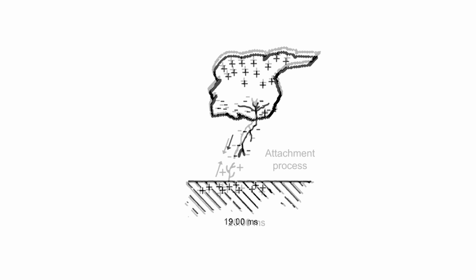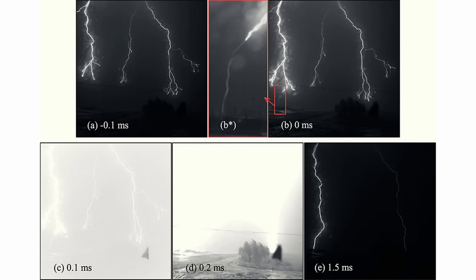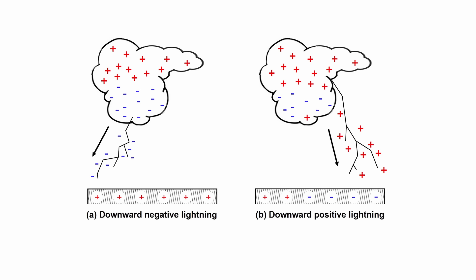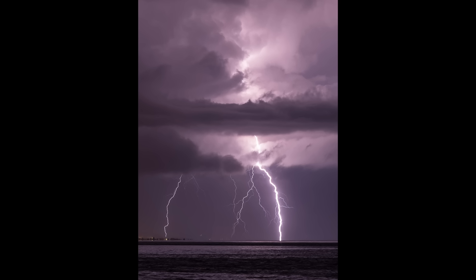Laboratory experiments featuring both polarities of leaders unmistakably demonstrate a faster final jump with negative polarity leaders.